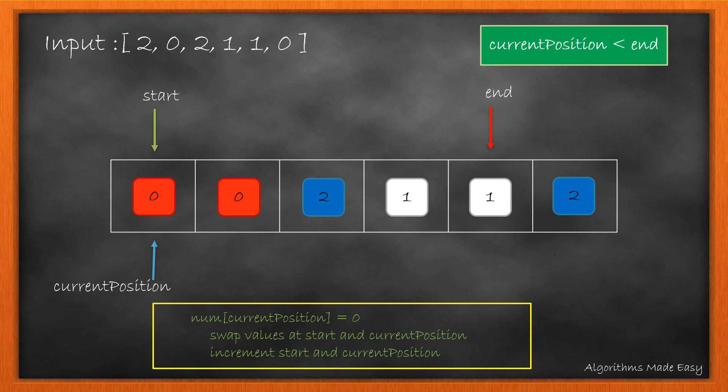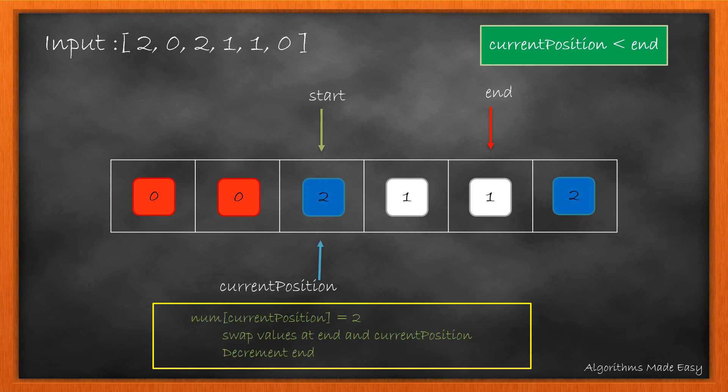We again check the value at current position. As it is 0, we swap the values at start and current position which in this case is same. So we just increment the start and current position. Again we do the same as value is 0. Now this time the value is 2.